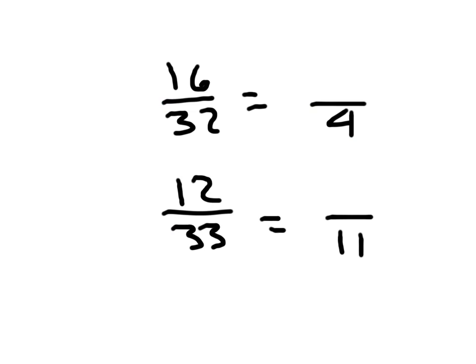Here are two final problems where you're asked to write an equivalent fraction. The first one, you're going from 32nds to 4ths, so you divide by 8 in the numerator and denominator. 16 divided by 8 is 2, so 16 thirty-seconds equals 2 fourths.